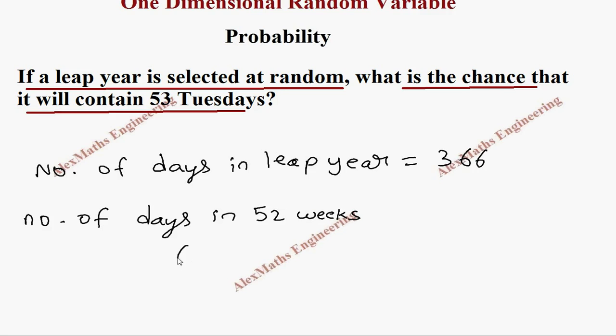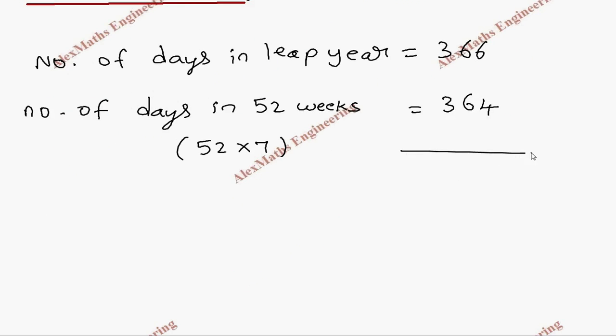That will be 52 into 7. If we multiply, it is 364. So from the total number of days in the leap year, if we subtract the number of days in 52 weeks, we get two days remaining.